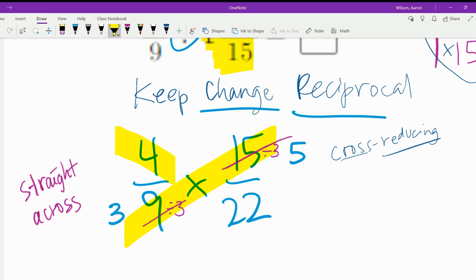Now if you look diagonally the other way, 4 and 22, those also share a common factor because they're both even. So they're both divisible by 2. So we've got 22 divided by 2, which is 11. And then we've got 4 divided by 2, which is 2.